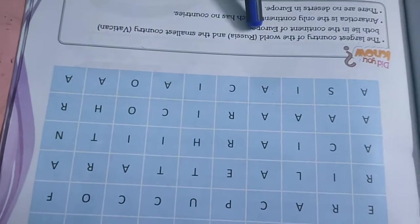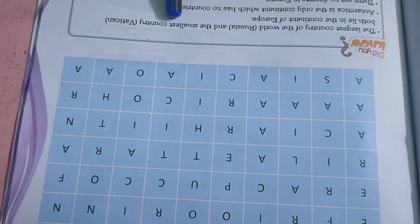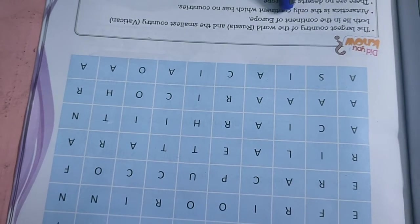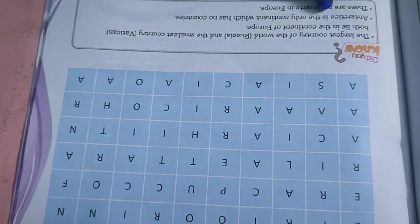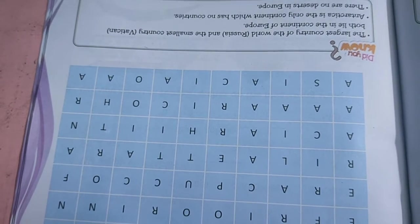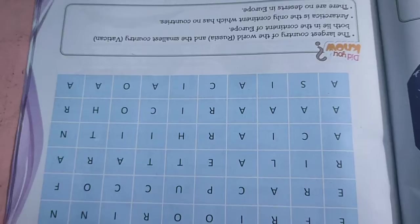The largest country of the world Russia, and the smallest country Vatican. This will come as an MCQ. Both lie in the continent of Europe. Antarctica is the only continent which has no countries. There are no deserts in Europe.